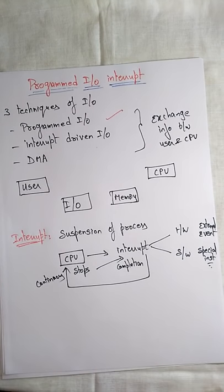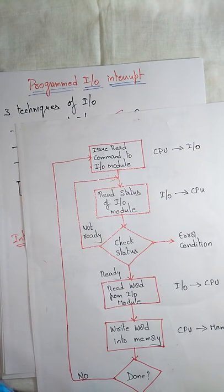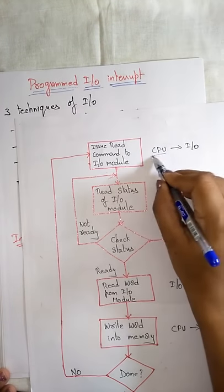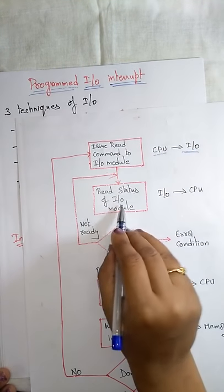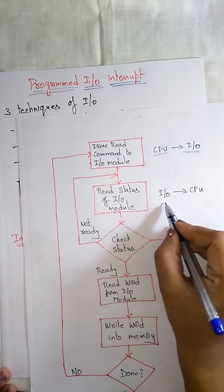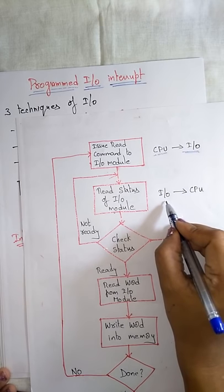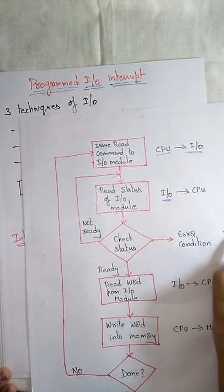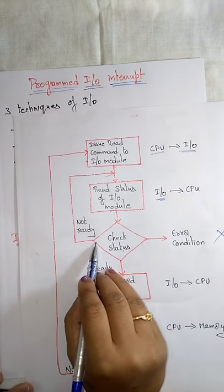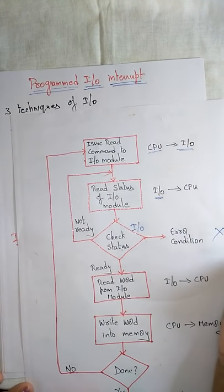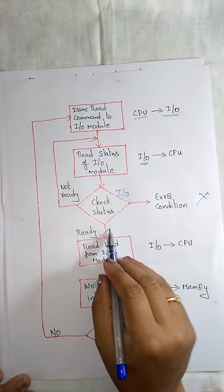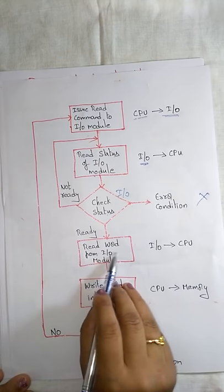Now let us see about Programmed I/O with an example. First, the CPU issues a read command to the I/O module. After that, it reads the status of the I/O module — meaning the CPU is checking whether the I/O device is ready to accept or send data. If an error condition occurs, the program quits. If the I/O device is not ready, the CPU reads the status again and again until it is ready.